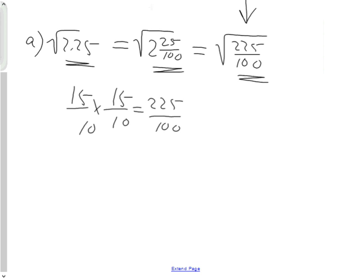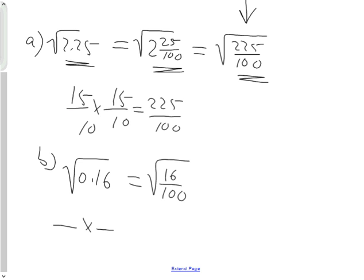For the second one, B, it says what is the square root of 0.16? Since 0.16 is a terminating decimal, it's also the same thing as 16/100. This one's a little bit easier than the last one, because the last one was a mixed fraction. What fraction multiplied by itself is 16/100?